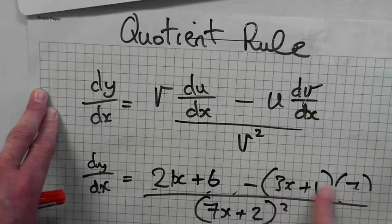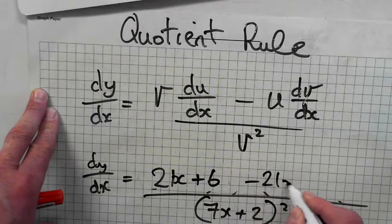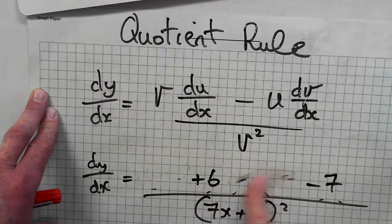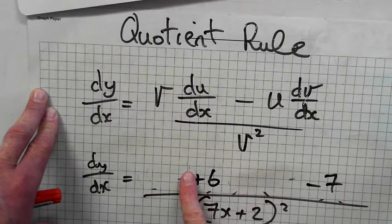So, minus 21x, minus 7. Alright, so plus 21x minus 21x cancel each other. You get 6 minus 7, it's minus 1.